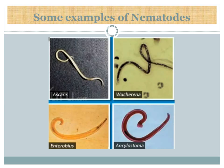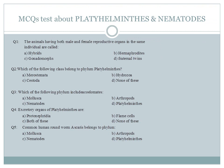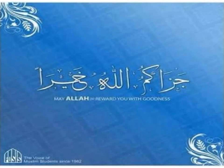Some examples of nematodes shown include Wuchereria, Enterobius, and Cyclostoma. That covers all about Phylum Nematoda. I hope dear students you understand about Phylum Platyhelminthes and Nematoda. Please share your feedback or comments. Thanks to all.